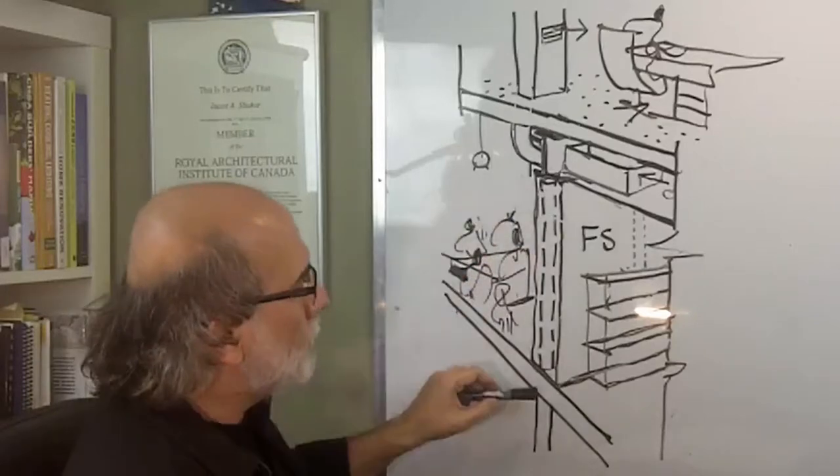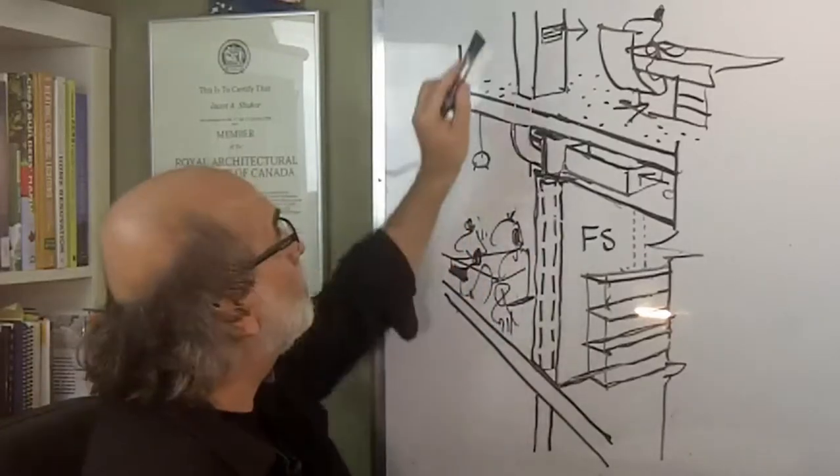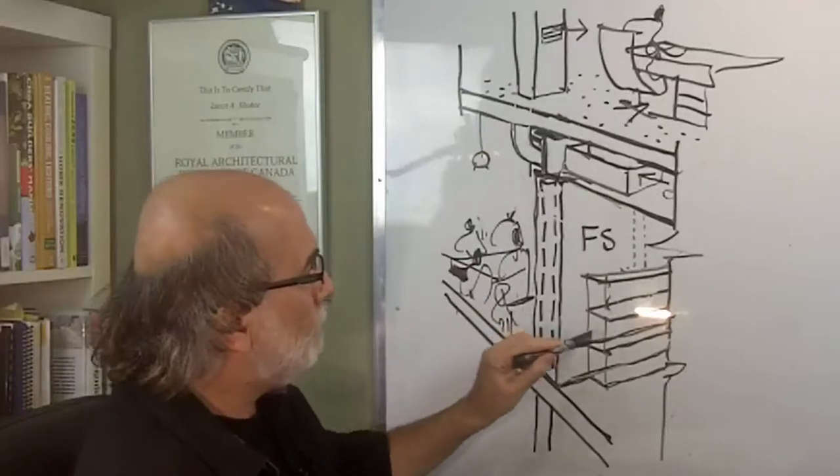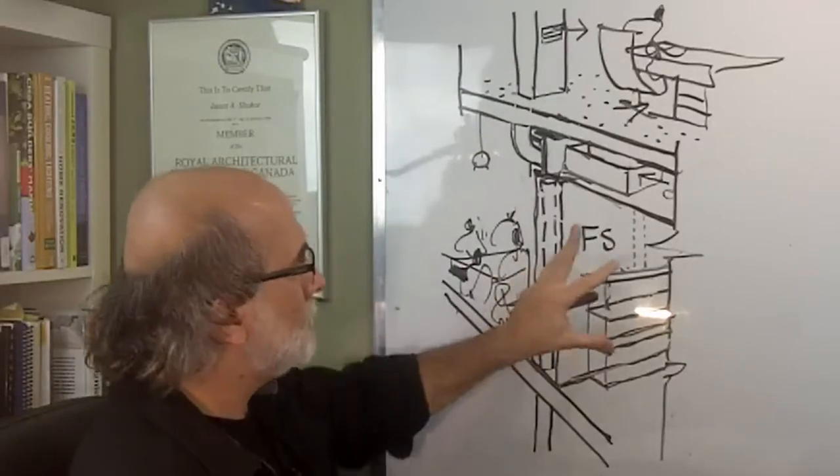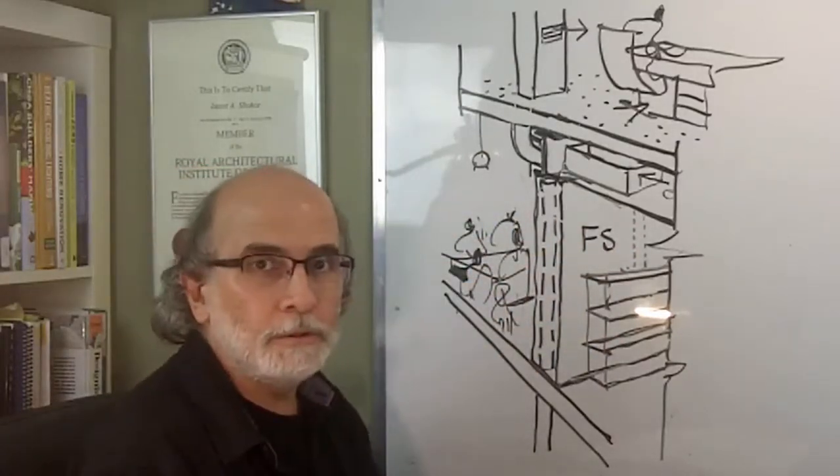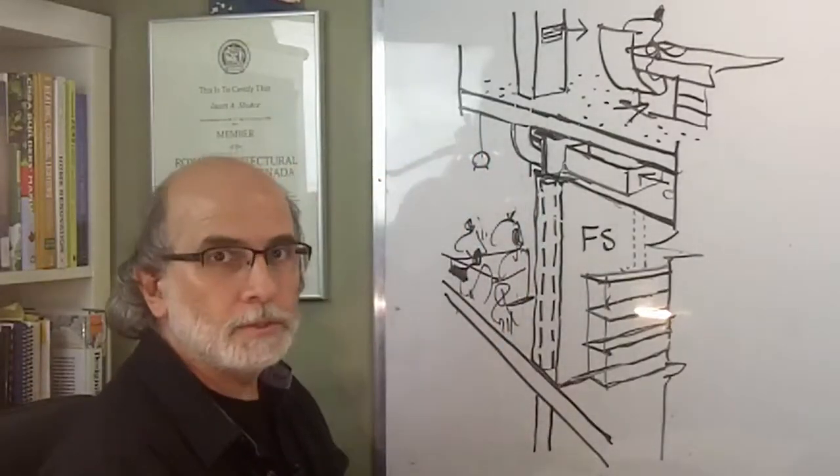So the demising wall must have a fire resistant rating due to the fact that these compartments have different functions or different uses.